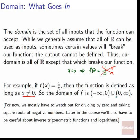Later in the course, we'll also have to worry about inverse trigonometric functions, which are only defined over certain inputs, and logarithms, which also have parts they're not allowed to take. But right now, just dividing by 0 and taking square roots of negative numbers are the two things we need to think about when considering what can go into a function. Domain is what goes in.